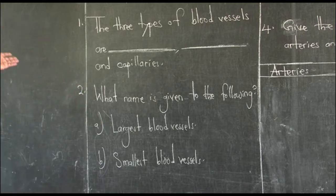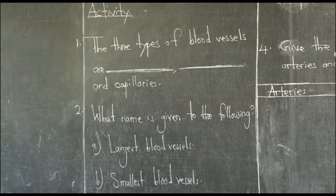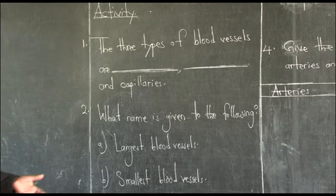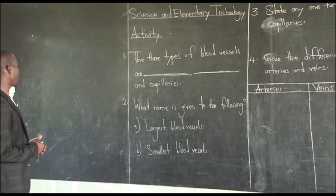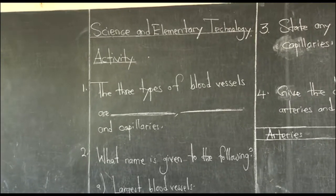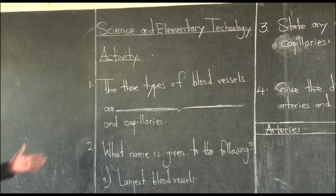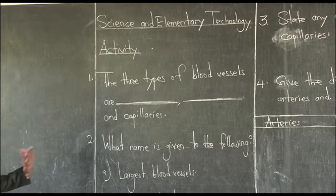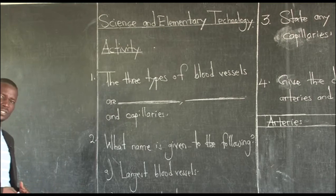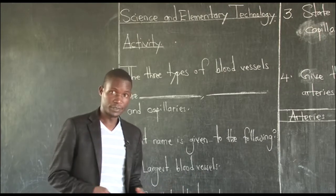So, in our lesson today we are going to have an activity. Number one says: the three types of blood vessels are dash, dash, and capillaries. We have been given one of them, but we need to understand first — what are blood vessels? Simply, as we discussed last time, blood vessels are tubes that carry blood around the body.